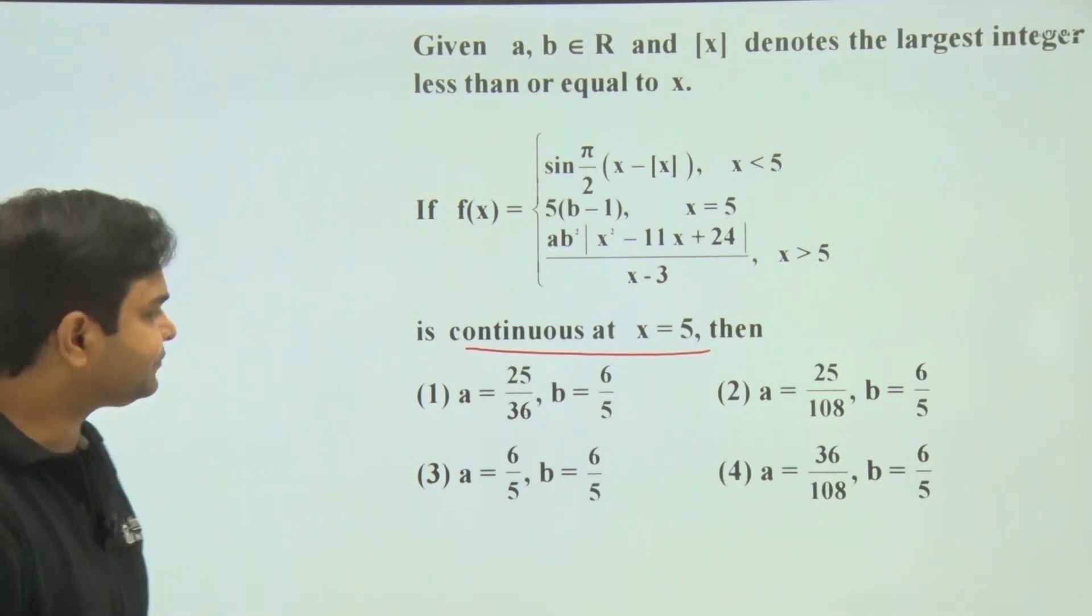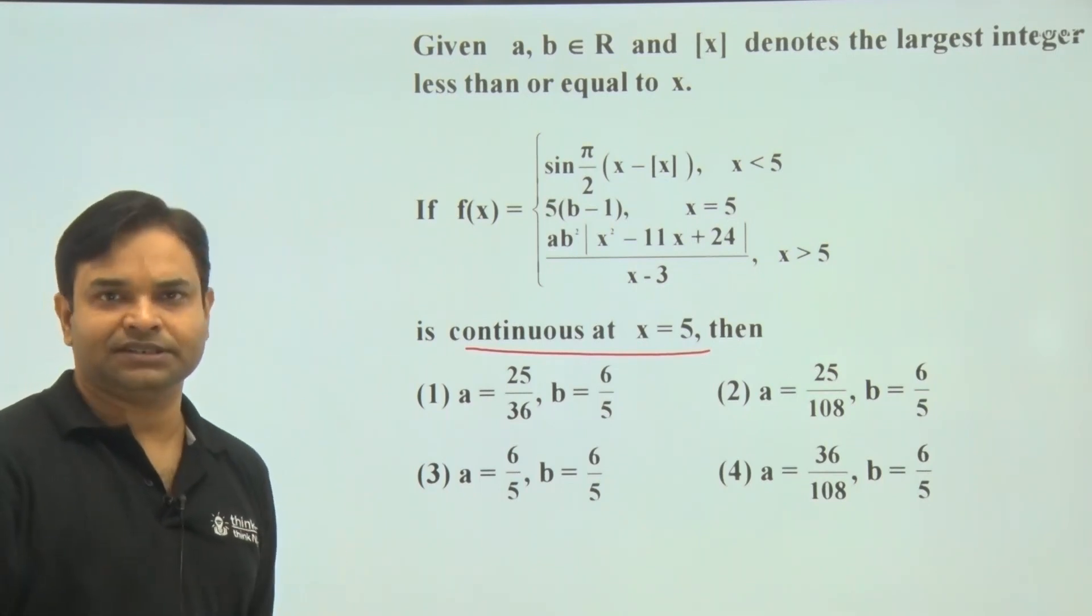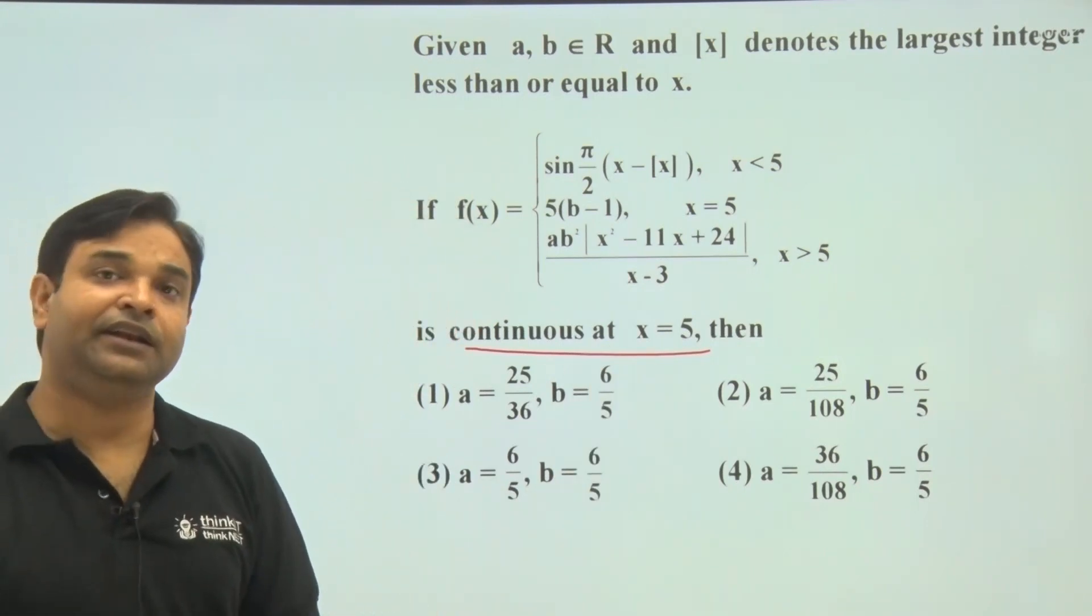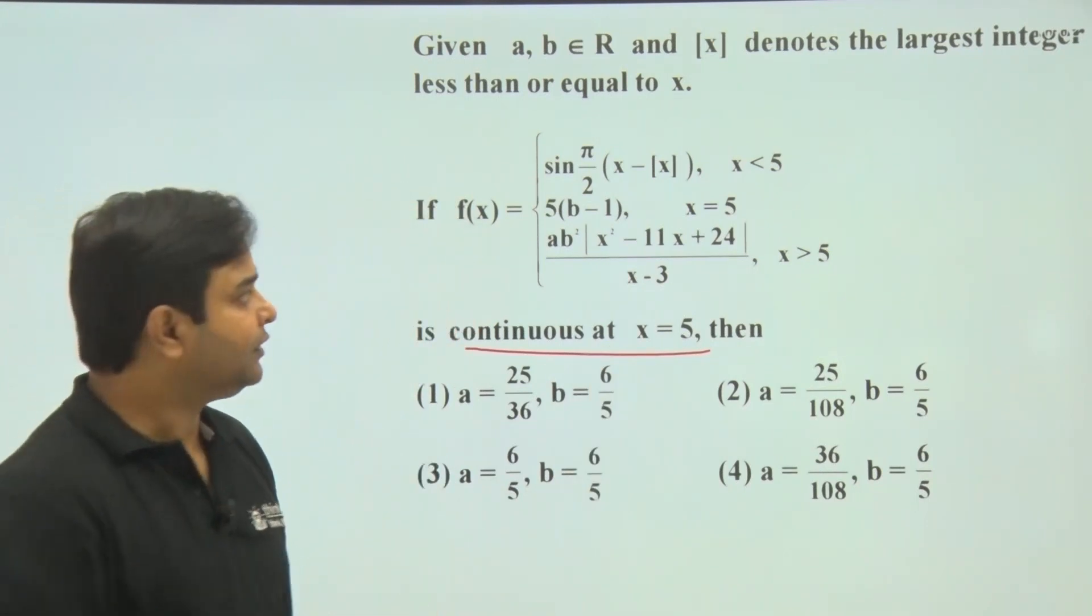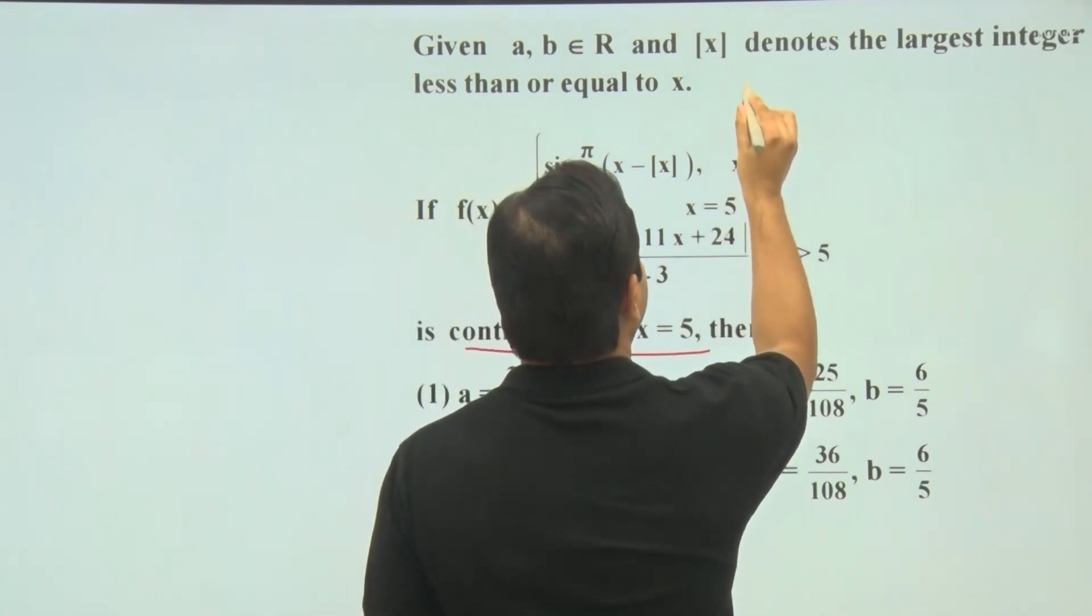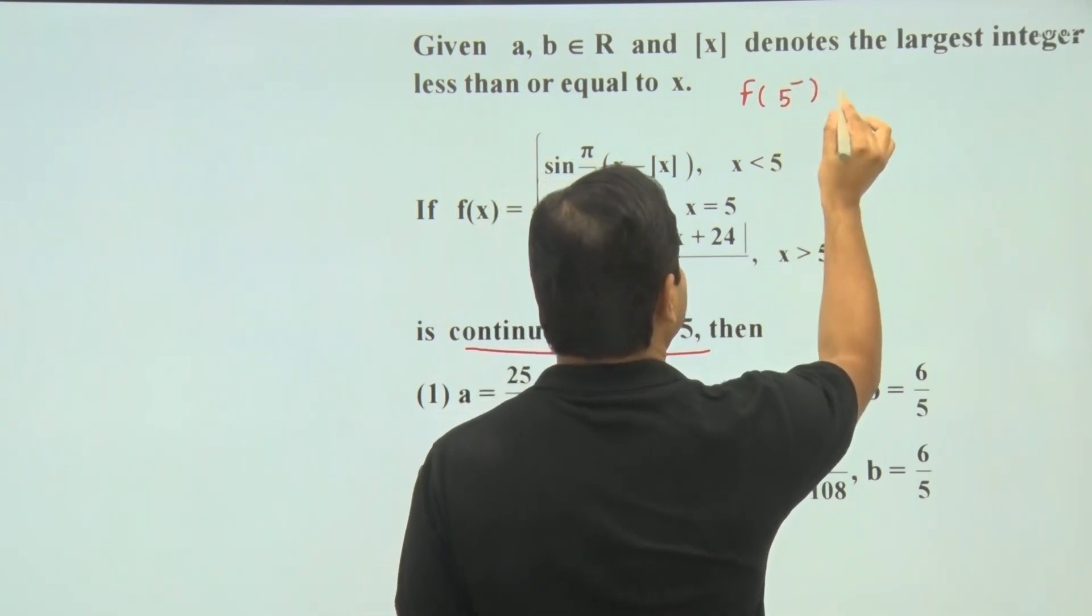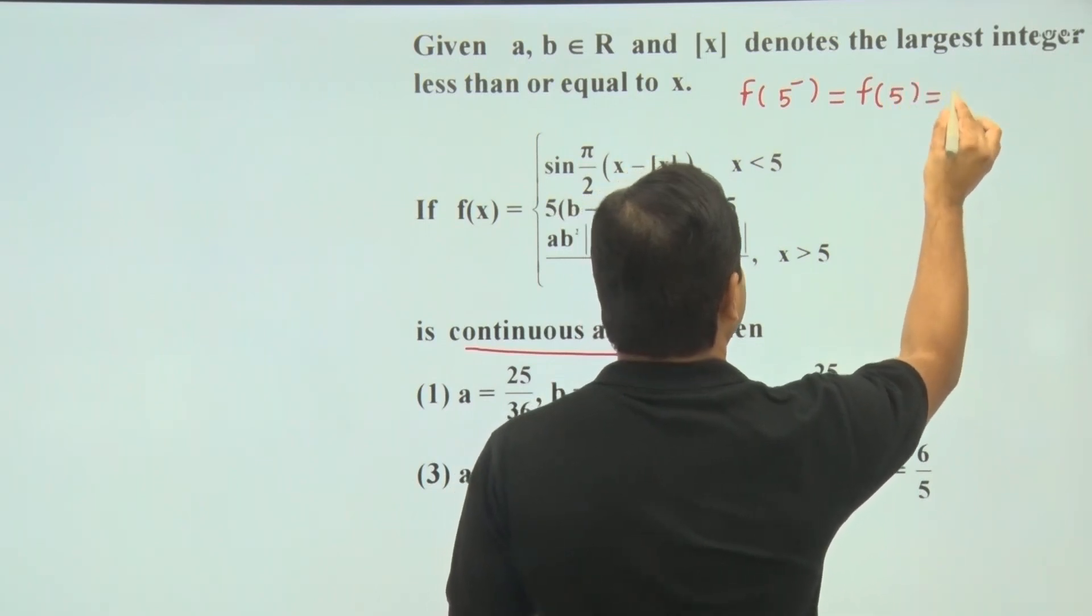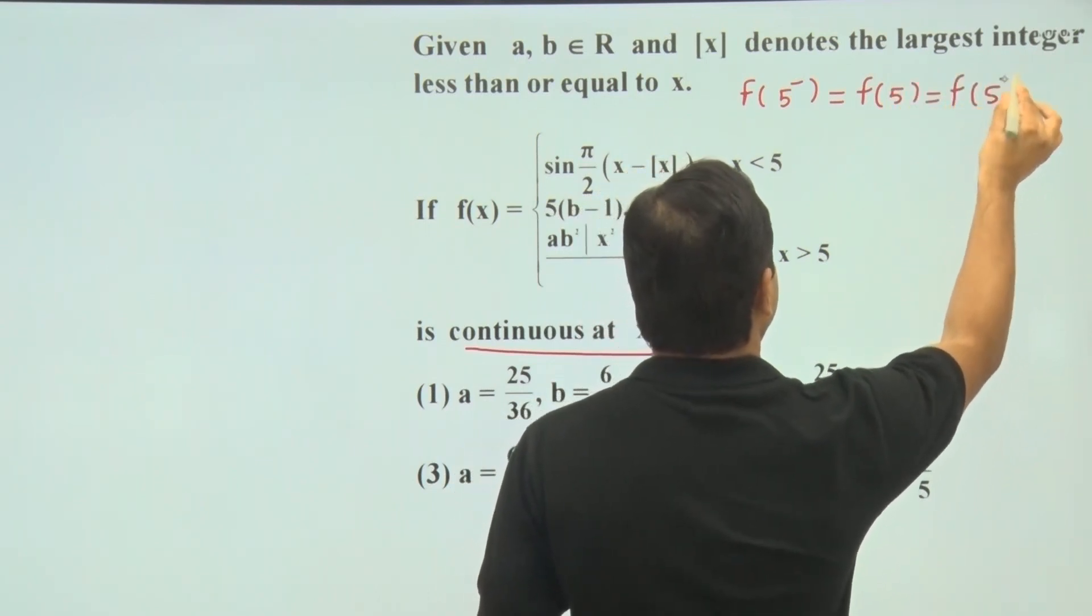We know that if any function is continuous at any point and the function is defined in the neighborhood of that point, then for continuity we have to check LHL. This must be equal to the value of the function, and this must be equal to RHL.